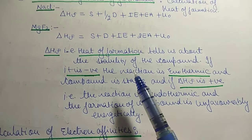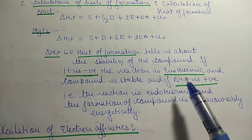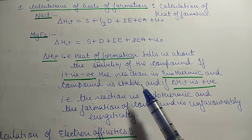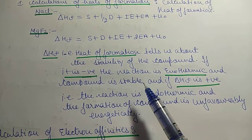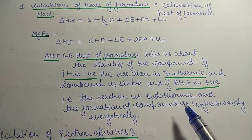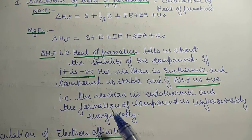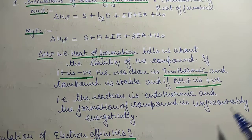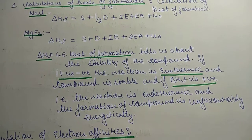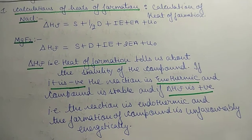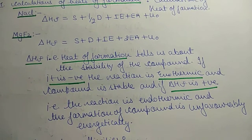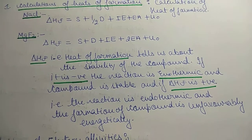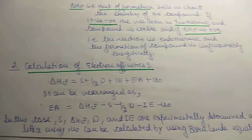The heat of formation tells us about the stability of the compound. If ΔHf is negative, the reaction is exothermic and the compound is stable — energy released means the process leads to stability. If ΔHf is positive, the reaction is endothermic and formation of the compound is energetically unfavorable; you require a lot of energy to carry out the reaction, so it is not thermodynamically feasible.